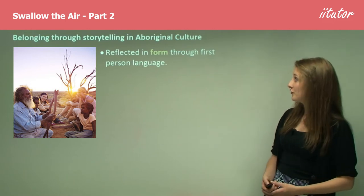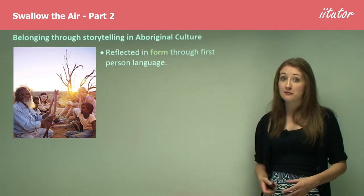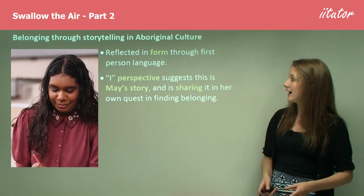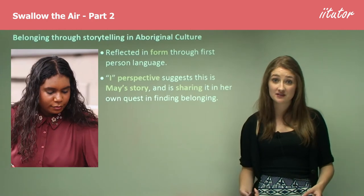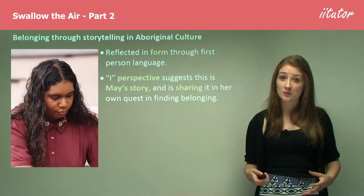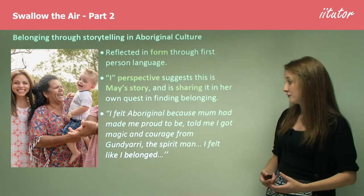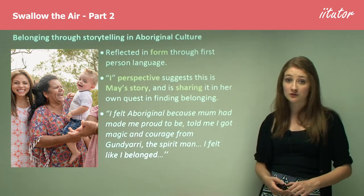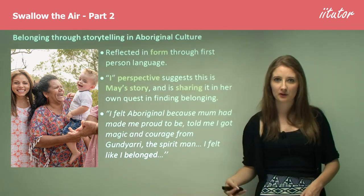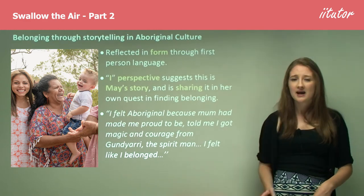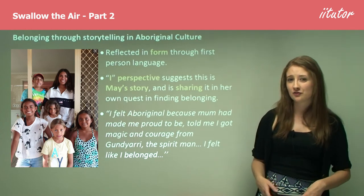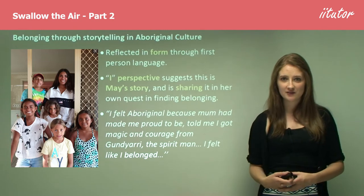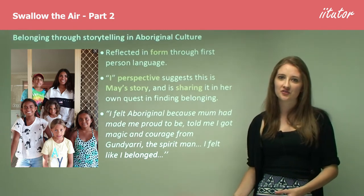The next theme is belonging through storytelling in Aboriginal culture. This is reflected in form through the first-person language — the 'I' perspective throughout the book suggests this is May's story, shared in her own quest to find belonging. She's telling her own perspective and using that to order her ideas and realize what she wants as a person. The quote: 'I felt Aboriginal because mum had made me proud to be, told me I got magic and courage from the Guru Adji, the spirit man. I felt like I belonged.' There you have a direct reference to belonging, and through first-person pronouns, references to her mother, and her culture, she's finding belonging through traditional means such as storytelling — her mother told her she belonged, and she believes it and wants to demonstrate it through her own story.